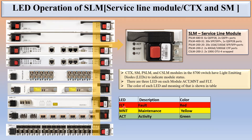If the Fault LED is red, it means there is a fault inside the card. MNT Maintenance is indicated by yellow, and Activity is green — if it is green, everything is okay. If the Maintenance light is yellow, it means there is a maintenance activity, such as a loopback or loop on any port.